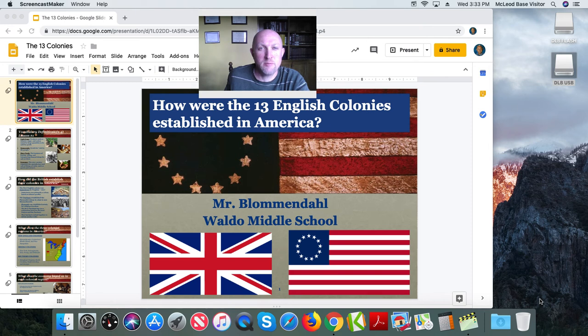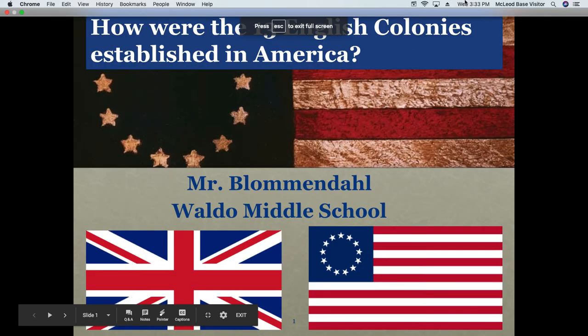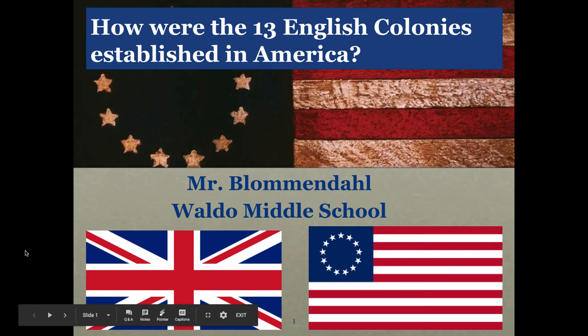Hello ladies and gentlemen, and welcome to today's lesson — the very first lesson in eighth grade social studies. Today we are going to learn how the 13 English colonies in the United States, or what became the United States, were originally established. Our essential question today is: how were the 13 English colonies established in America? That should go across the top of your Cornell notes.